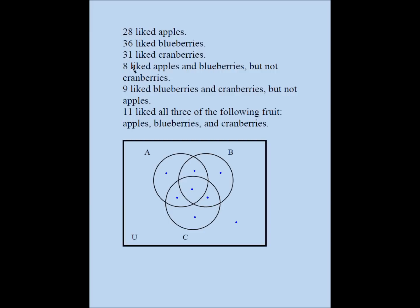Note: 28 people like apples doesn't mean 28 should go in just the apple-only region. It simply means those four regions should add up to 28. If the question said 28 people liked only apples, then 28 would go in that single region. These four numbers should add up to 36, and these four should add up to 31.